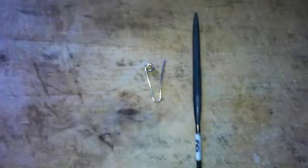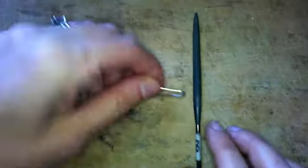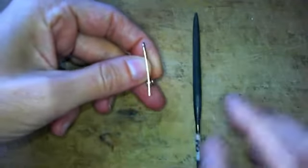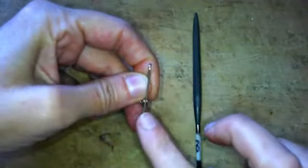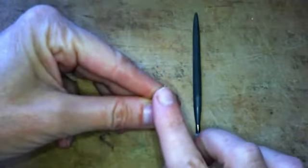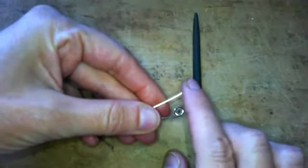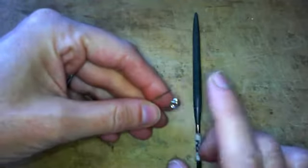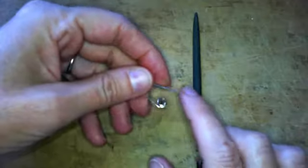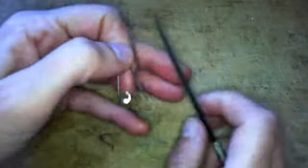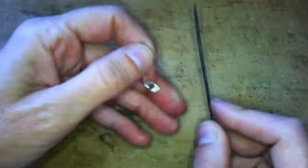Good morning. The next step for your earring hook is we are going to file this a little bit thinner and create a rounded end here so we don't cut our ear when we go to put this in, or the person that we're gifting our earrings to doesn't cut their ear. So you need a file for your earring hook for that.